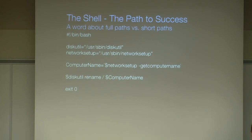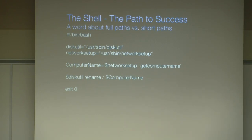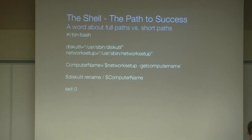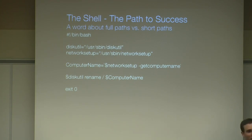This example script uses variables to assign commands for diskutil and networksetup, explicitly stating these locations in variables at the top. Then those variables are invoked with the dollar sign — which is how you invoke a variable in bash shell scripting. The idea is that all the commands are specified in the beginning. If paths for diskutil or networksetup ever change, you only need to make one modification: just change the variables.